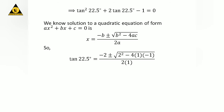Plugging the values of a, b, and c, we get tangent of 22.5 degrees is equal to minus 2 plus or minus square root of 2 squared minus 4 times 1 times minus 1, upon 2 times 1. Simplification gives us tangent of 22.5 degrees is equal to minus 2 plus or minus square root of 8, upon 2.